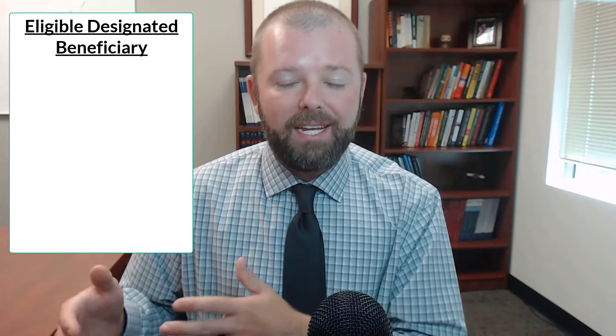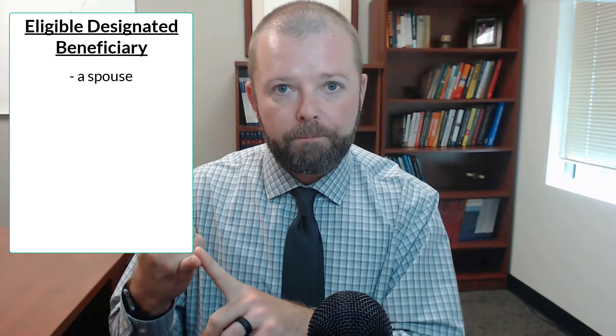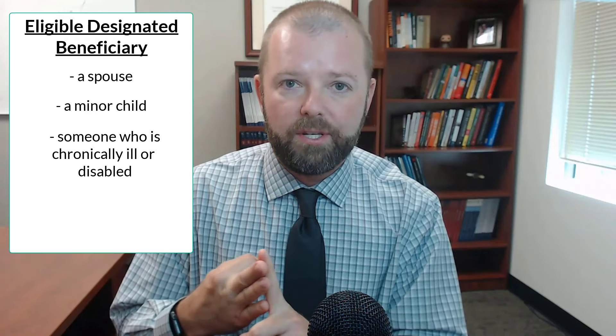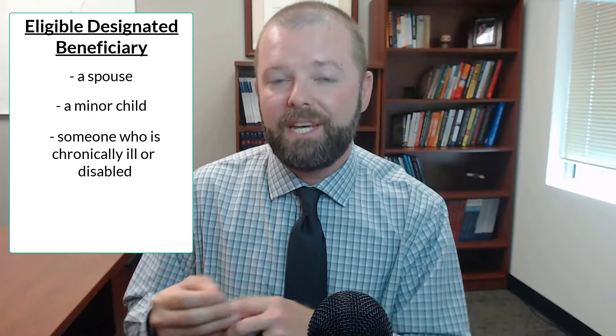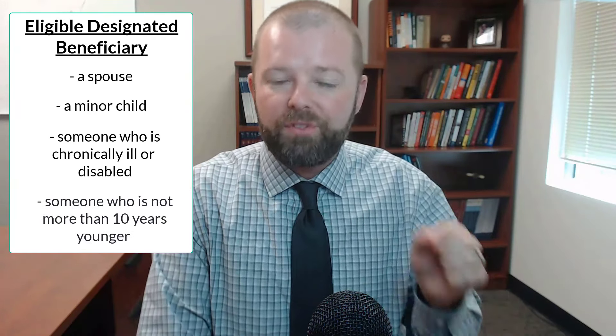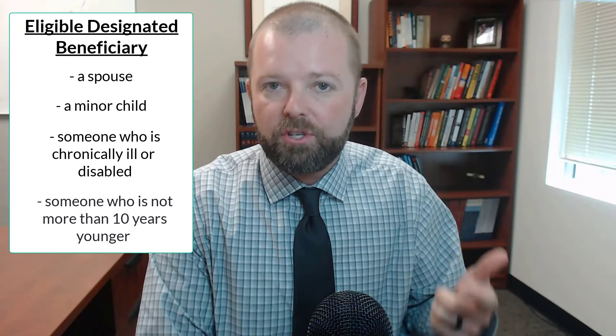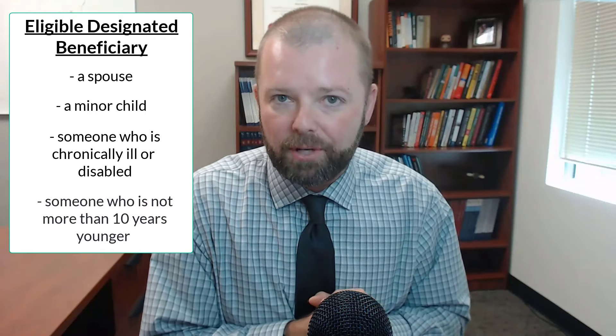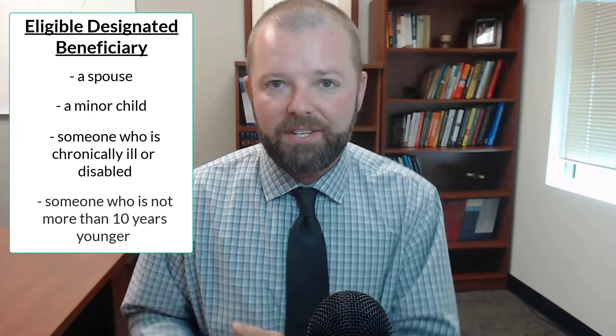The IRS has allowed a deferral of tax on all this money for a long time, so they don't let you keep the money in this account forever. This is where the complexity lies, because there are three different sets of distribution rules for three different types of beneficiaries. The first type is called an eligible designated beneficiary, and it includes a spouse, a minor child, someone who is chronically ill or disabled as defined by the IRS, or someone who is not more than 10 years younger than the person who died.